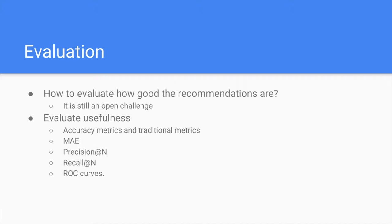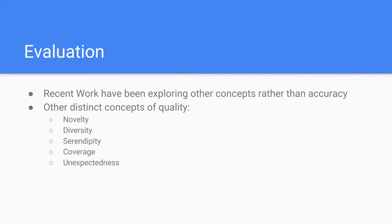Alternatively, recent works have been exploring other concepts rather than simply using accuracy-based metrics. Some other concepts have been explored, such as novelty, diversity, serendipity, coverage, and unexpectedness. Briefly, novelty involves introducing novel items that the user did not know about yet. Diversity relates to increasing the variety of items in the recommendation list, recommending not solely more of the same. Serendipity means providing good surprises or pleasant findings to the users. Therefore, we focus more on the concept of unexpectedness in this research.